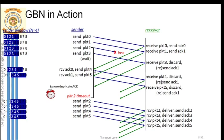Immediately after acknowledgement 1 is received at the sender side, the sender should correctly understand that the receiver has received both packets - packet 0 as well as packet 1. If the receiver has received both packets in order, that is 0 and 1 in order, only then he will be transmitting acknowledgement 1.